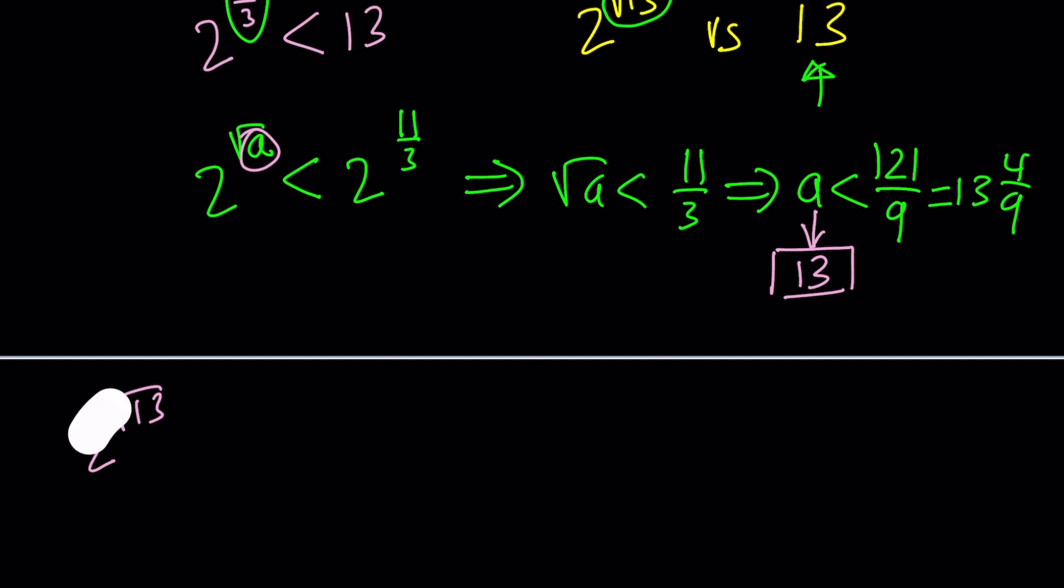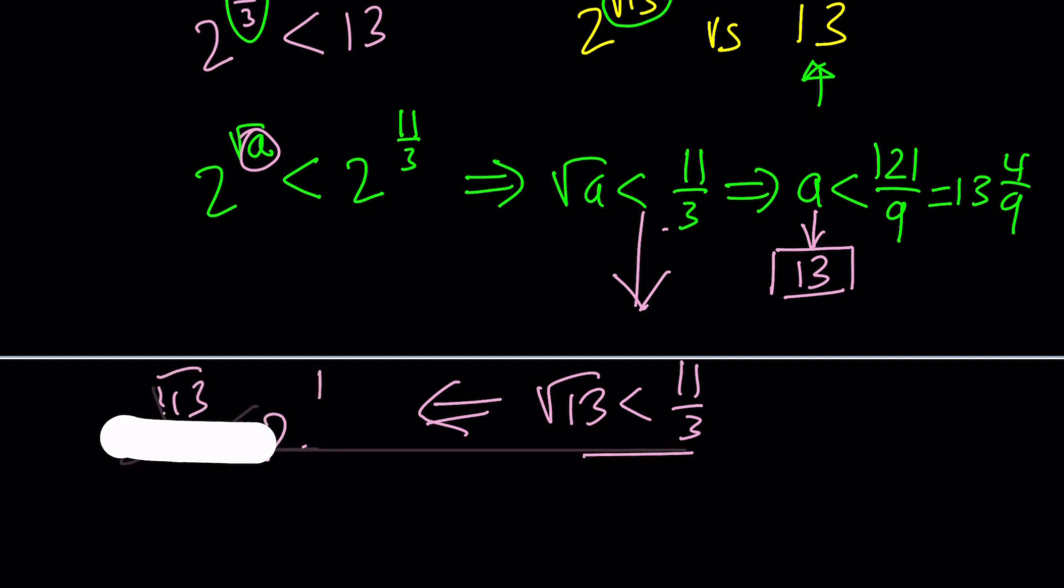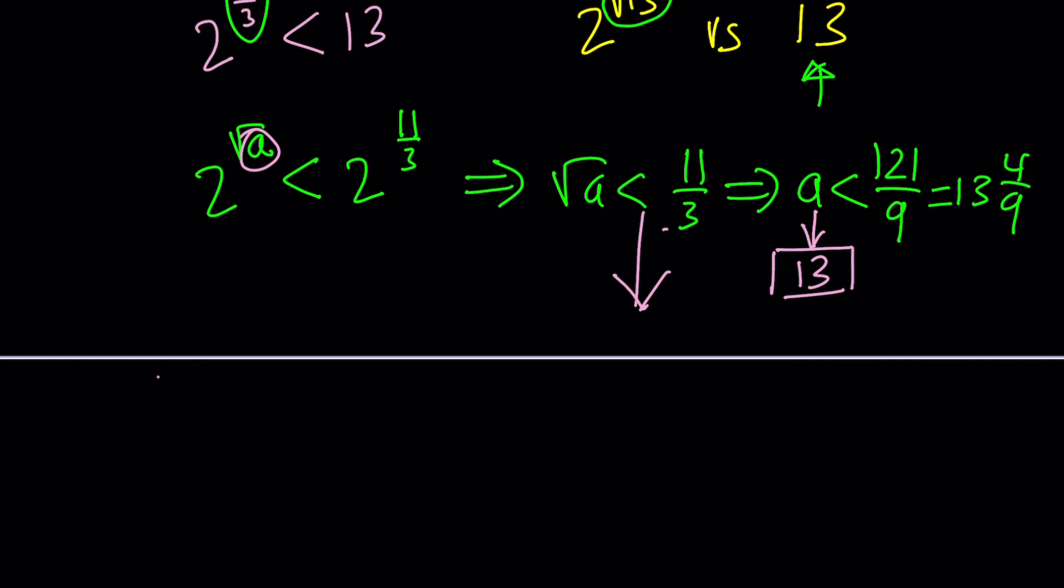Or going off of this first because this was before that. So, this means root 13 is less than 11 thirds, which implies 2 to the power root 13 is less than 2 to the power 11 thirds. After all, this pen goes crazy. Anyways, 2 to the power root 13 is less than 2 to the power 11 thirds. You get the idea?